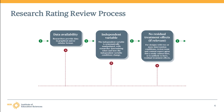First, reviewers need to ensure that the outcome measure of interest meets outcome requirements, including the inter-assessor agreement requirement, as well as determining that there is no evidence of a confound. If a study passes the first step, the reviewer will then assess whether the data are available in graphical or tabular format, and then determine whether the independent variable was systematically manipulated by the researcher. If so, the reviewer will then determine if there is evidence of any residual treatment effects.